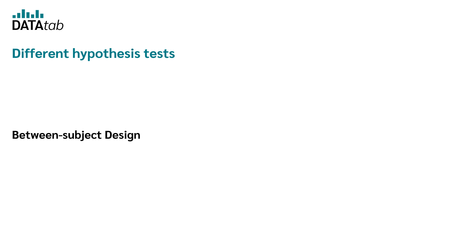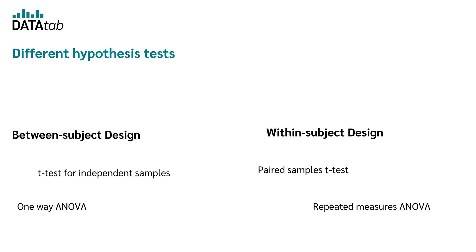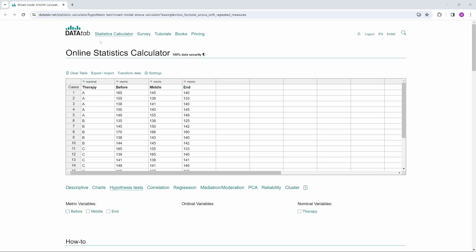You need different hypothesis tests depending on whether you use a between-subject or within-subject design. For a between-subject design, an independent samples t-test or a one-way ANOVA is used. For a within-subject design, a paired-samples t-test or a repeated-measures ANOVA is used. Datadab will help you find the right hypothesis test — let me show you how.